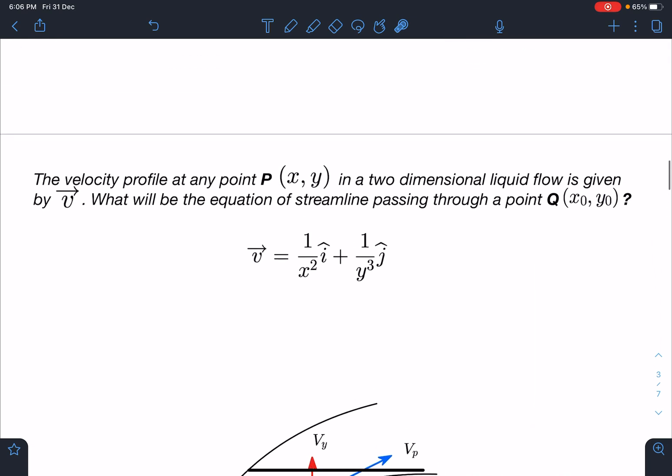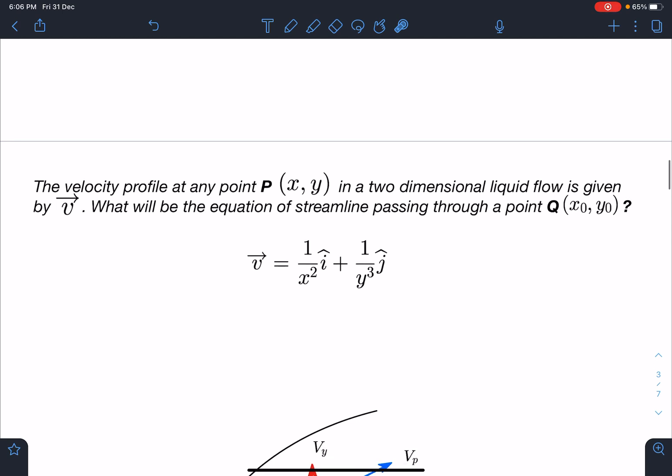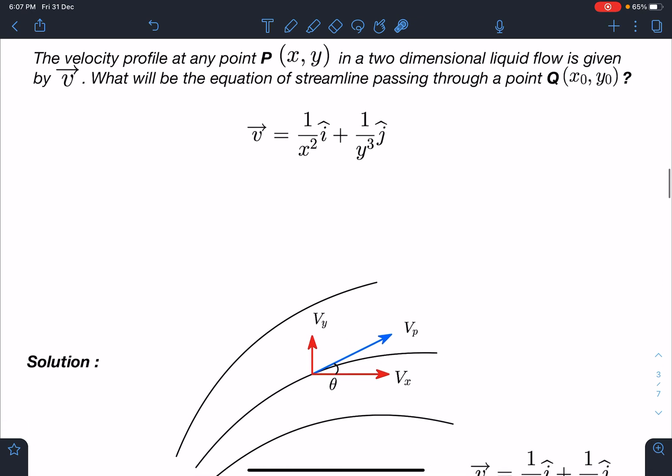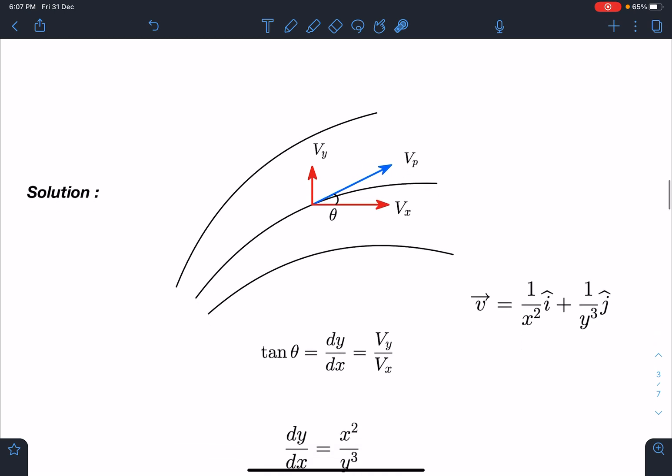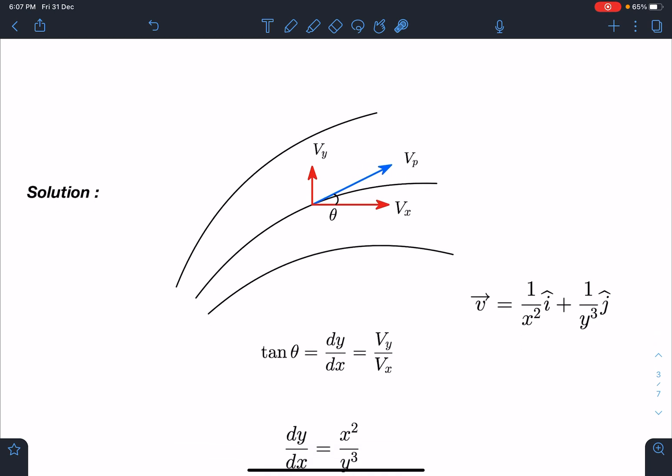Here is the problem: The velocity profile at any point P(x, y) in a two-dimensional liquid flow is given by vector v. What will be the equation of streamline passing through a point Q(x₀, y₀)? And vector v is given as (1/x²)î + (1/y³)ĵ.